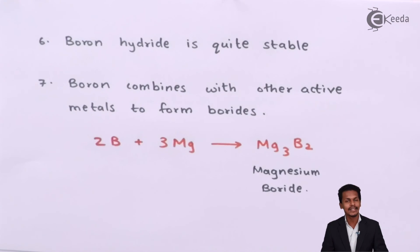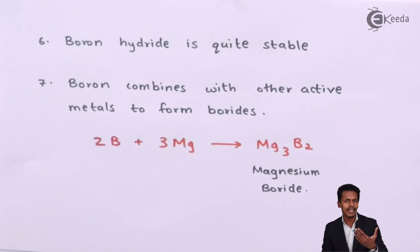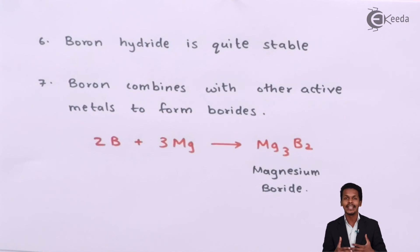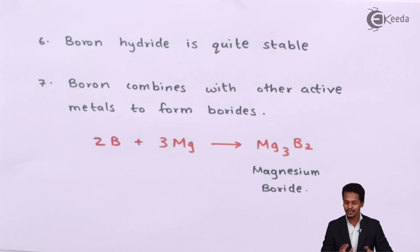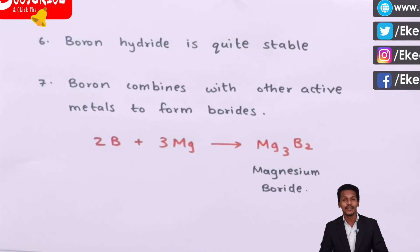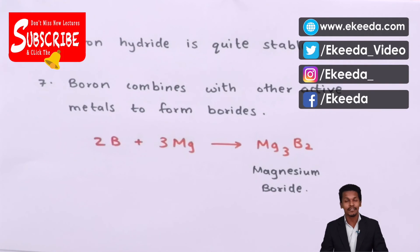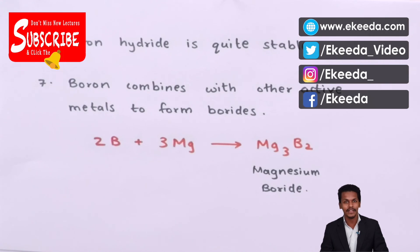These are the key points that show how boron, despite being a group 13 element, exhibits different properties compared to the other elements in the same group. Thank you friends for watching. I hope you have clearly understood the various anomalous properties exhibited by boron. Please share this video and subscribe to the EKD channel.